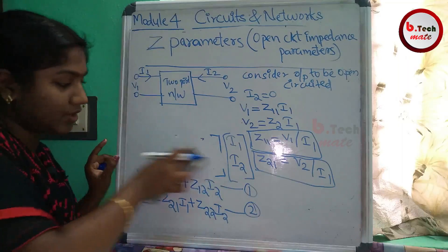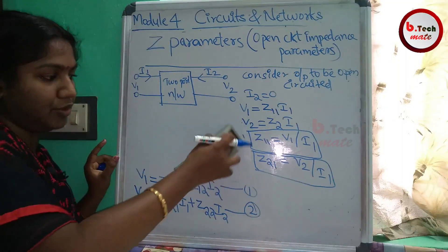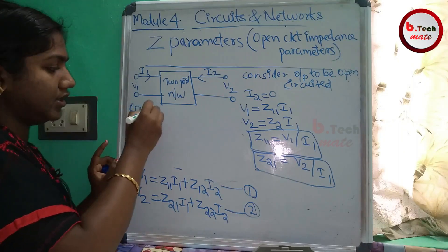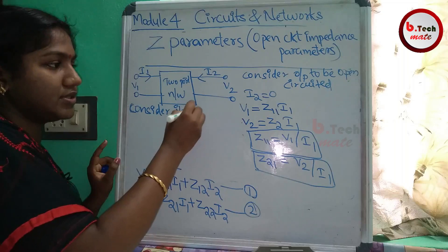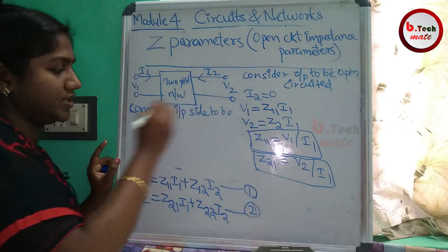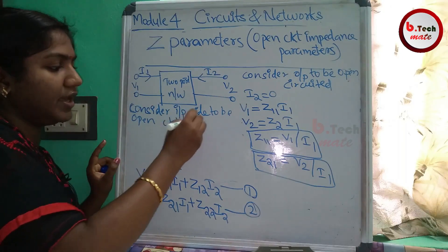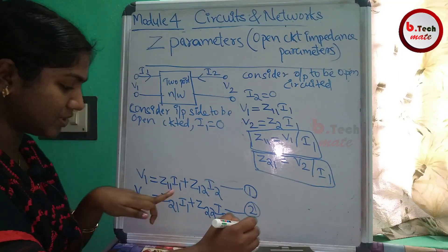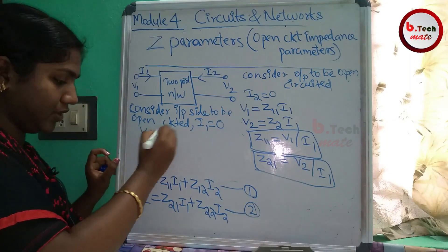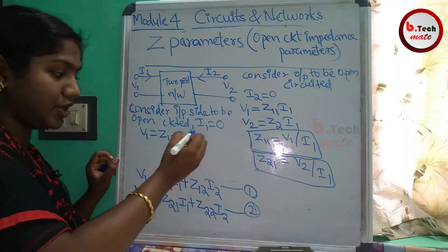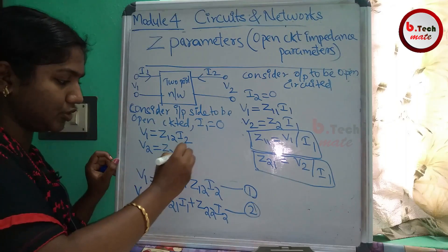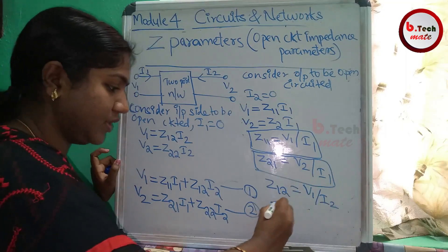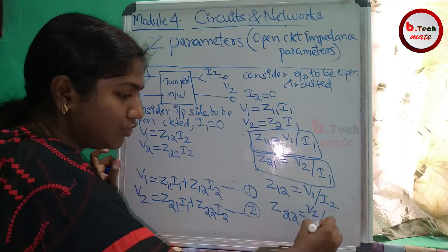Now let's open the input side to open circuit. If the input side is open circuit, then I1 equals 0. Substituting I1 = 0 into the equations: V1 equals Z12·I2 and V2 equals Z22·I2. Therefore, Z12 equals V1 divided by I2, and Z22 equals V2 divided by I2.